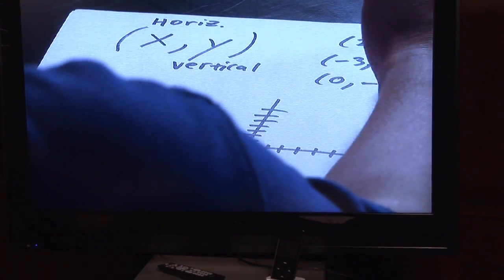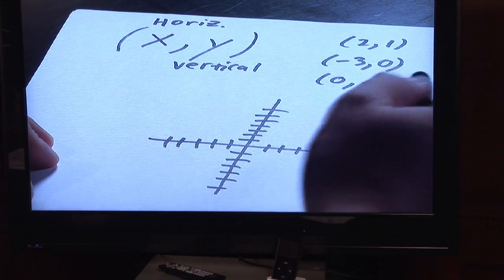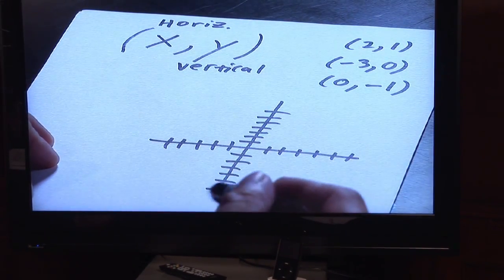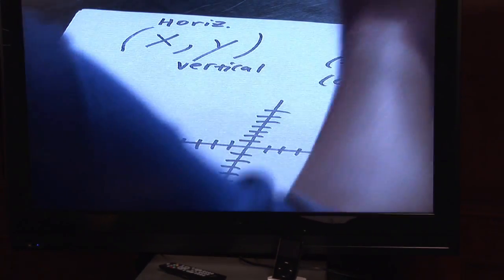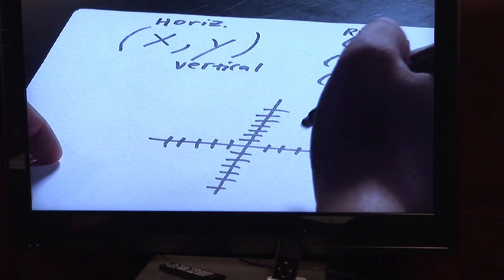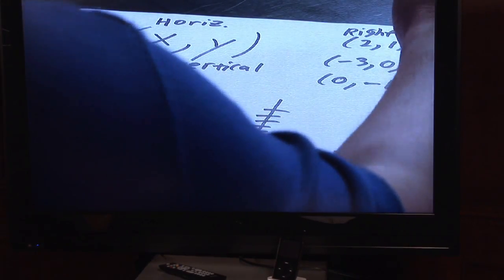Let's talk about first two, one. The two means you have to go to the right. And the one, being the Y coordinate, tells you to go up one.